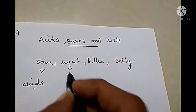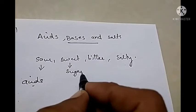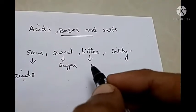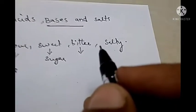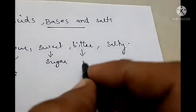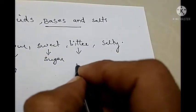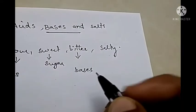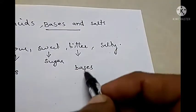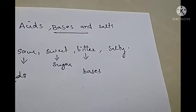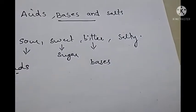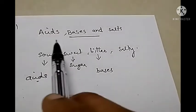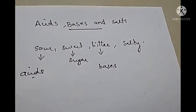Sweet taste, we know, is due to the presence of sugar. Then, bitter taste — what is the reason for the bitter taste of food items? It is due to the presence of some other kind of substances. They are known as bases. Bases are the substances which give a bitter taste to food items. So in this lesson, we are going to study more about acids, bases and salts.